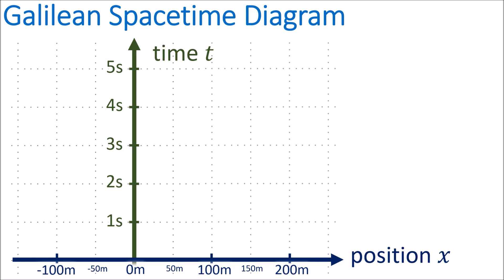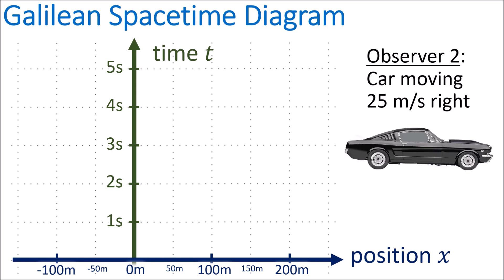Observer number two is a car moving at a speed of 25 meters per second to the right. If the car starts at the origin at a position of zero meters, after one second the car will have traveled 25 meters to the right, after two seconds its position will be 50 meters to the right, after three seconds 75 meters to the right, and so on and so forth.